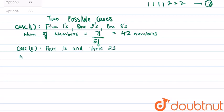So the number of numbers that can be formed in case 2 is 7! / (3! × 4!) which is 35 numbers. So the total numbers...